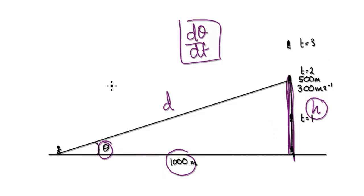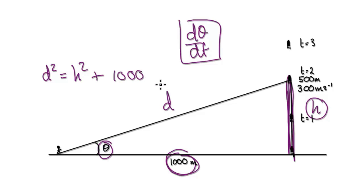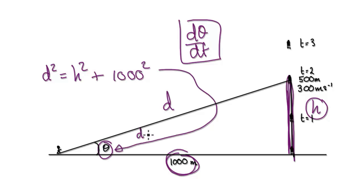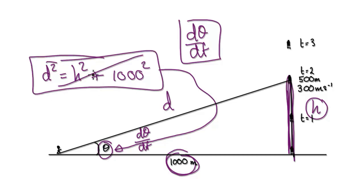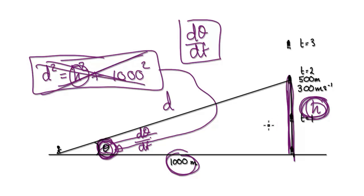Let's just choose the wrong thing to use first — let's use Pythagoras. If you use d squared equals h squared plus this length squared, you're not going to be able to obtain d theta by dt because the angle is not involved. So you don't really want to use Pythagoras. You want to find something else that connects the angle as well, because you're interested in the angle and you want to use h as well.